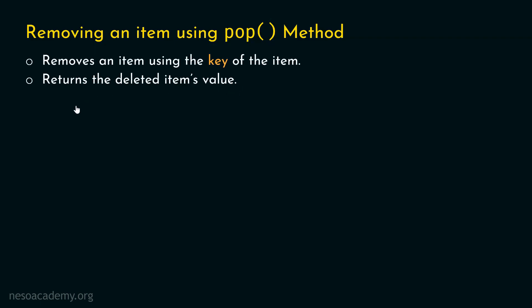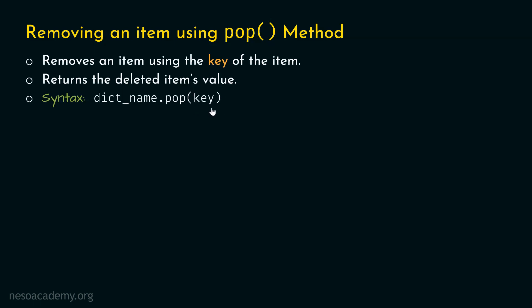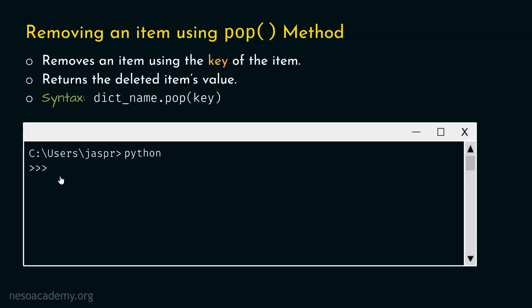The syntax of the pop method is as follows. First, we need to specify the name of the dictionary, then dot, then pop, and within parentheses we specify the key of the item which we want to delete. In order to understand how this works, let's open our command prompt and activate the Python interactive shell.